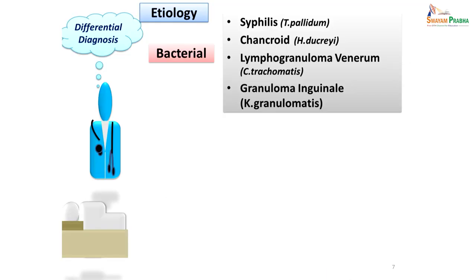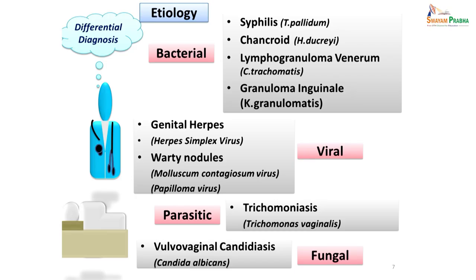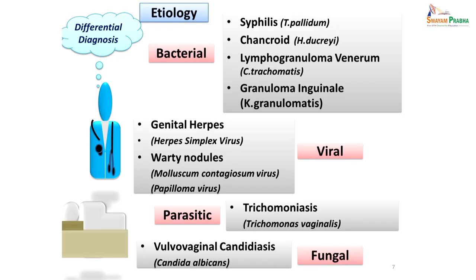Let us consider what bacteria can cause genital infections. When we come to the differential diagnosis we have to keep in mind syphilis caused by Treponema pallidum, next is chancroid, lymphogranuloma venereum, and granuloma inguinale. Not only bacteria — viruses can also cause genital lesions like genital herpes and warty nodules caused by various viruses. Parasites can also cause genital infections, especially trichomoniasis. Similarly, fungi like Candida can also cause genital infections. We have to keep all these etiological agents in mind before making a clinical diagnosis.